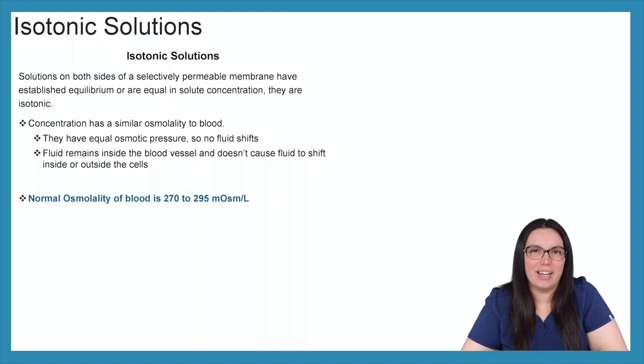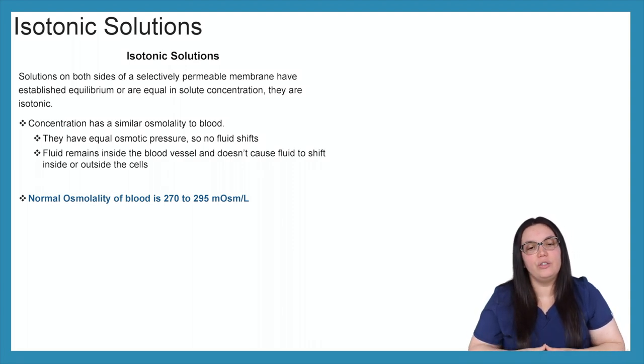Let's begin by talking about our isotonic solutions. So the solution on both sides of a selectively permeable membrane have established equilibrium or are equal in solute concentrations, thus making them isotonic. The concentration of isotonic solutions is similar to that osmolality of blood. They have equal osmotic pressure, thus not having any fluid shifts occurring inside or outside of the cell. A normal osmolality is between 270 to 295 when it comes to isotonic solutions.